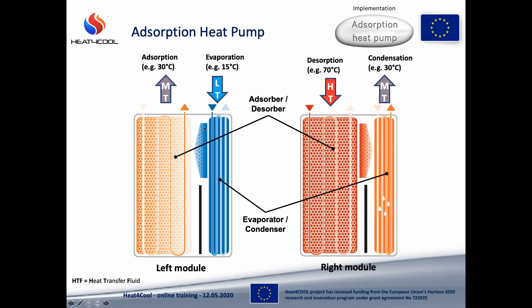In the adsorption-evaporation phase: during adsorption, heat is released to the ambient, therefore we need HTF at medium temperature level (MT) circulating through the adsorber, cooling it down. On the other hand, the evaporation process collects heat from the HTF — that's our cooling effect — and HTF at low temperature (LT) circulates through the evaporator. In the desorption-condensation phase, we have to add heat to the sorbent to regenerate it, so HTF at high temperature (HT) flows through the desorber, warming it up. During condensation, similarly to adsorption, heat is released and has to be dissipated, and here we use HTF at medium temperature (MT) again.